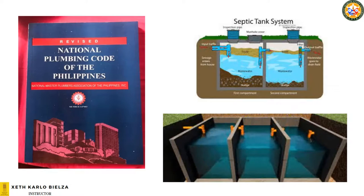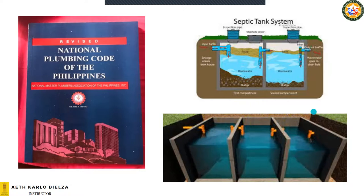What does the plumbing code say about the septic tank? Two chambers: one digestive chamber and a second chamber for leaching. However, with the latest memorandum released by the Department of Health, a septic tank should have three chambers as the minimum — one chamber for digestion and two chambers for leaching, so that the effluent becomes clear.